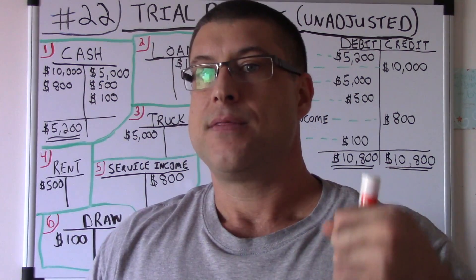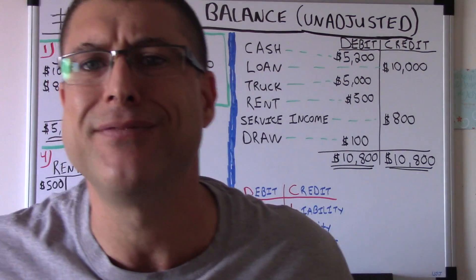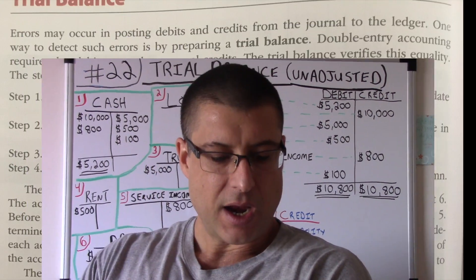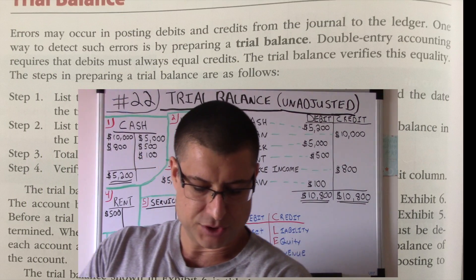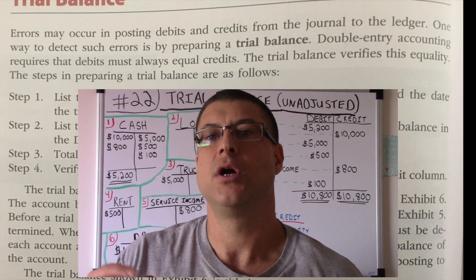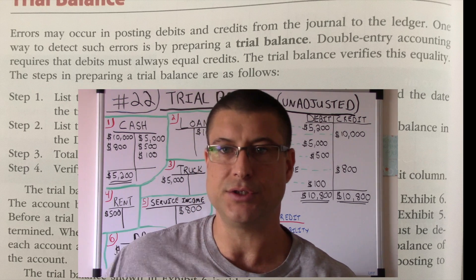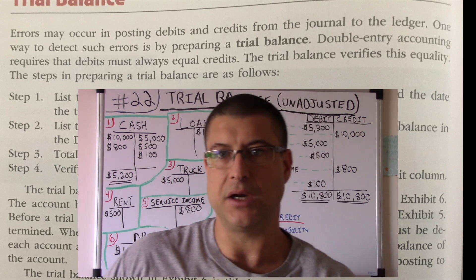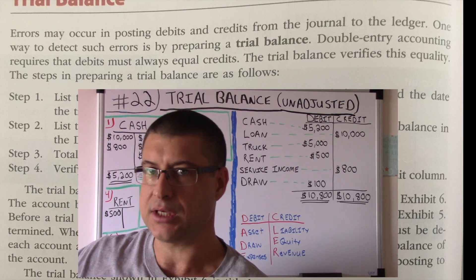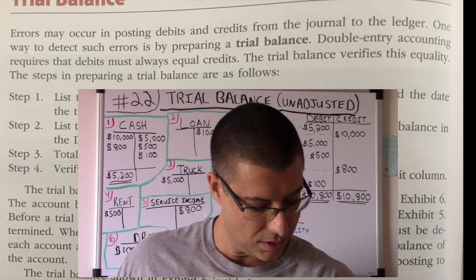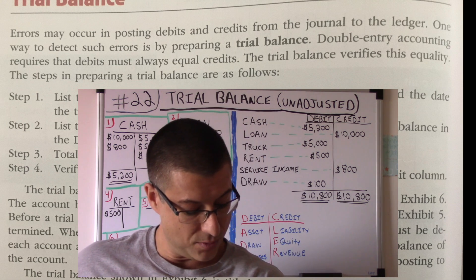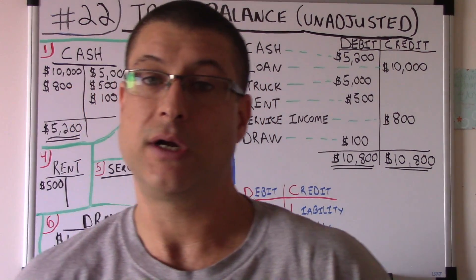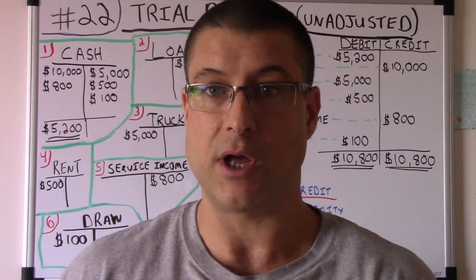We're going to do an unadjusted trial balance today. The book definition says errors may occur in posting debits and credits from the journal to the ledger — meaning from your journal entries to your T-accounts. When you transfer those, you might have errors, and one way to detect such errors is by preparing a trial balance.